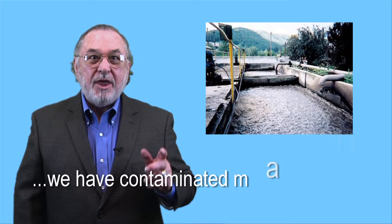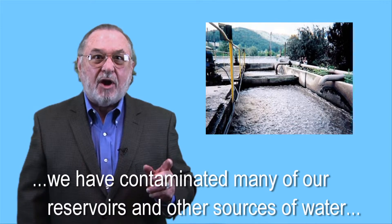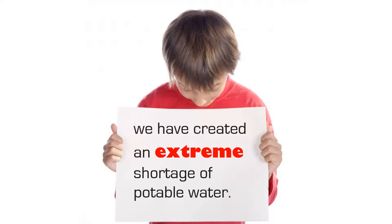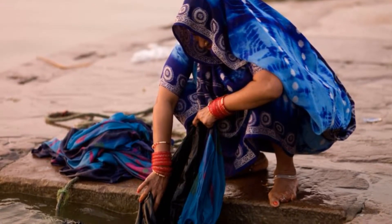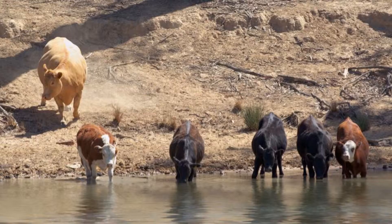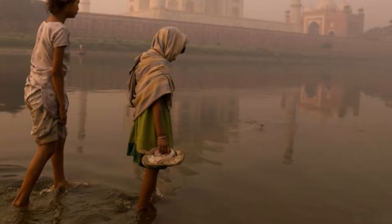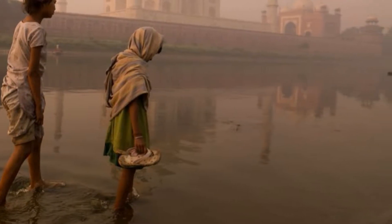Through sludge-generating wastewater systems, or the lack of any wastewater system, we have contaminated many of our reservoirs and other sources of water, creating an extreme shortage of potable water. I have traveled on most continents. I have seen villages empty their wastewater pipes into rivers where women stand in the water washing their clothes, where animals stand next to them, and 20 yards downstream young children drink from that same water.